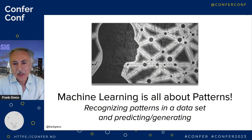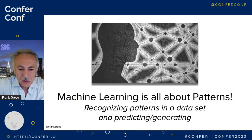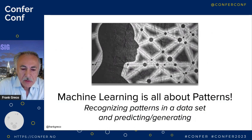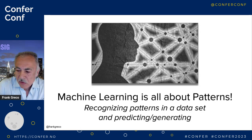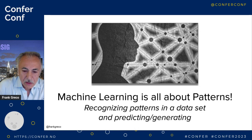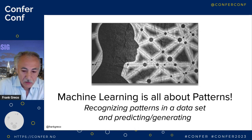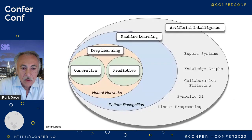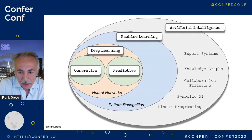So what exactly is machine learning? It's all about patterns — recognizing patterns in a dataset, looking through a huge corpus of data, and either predicting something or generating something. And since we've heard the term generative AI, let's see where all this fits.